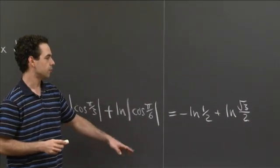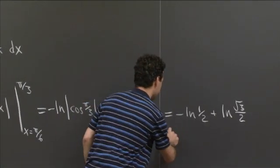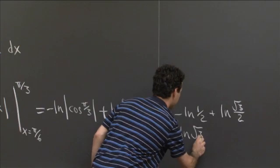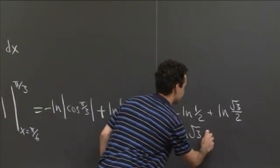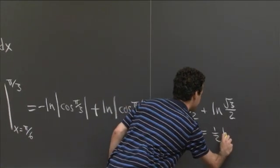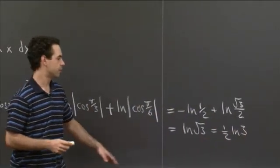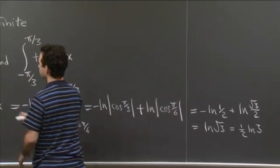And now you can use your logarithm rules to combine those into a single expression. So this is equal to ln of square root of 3, or you could even use one more logarithm rule if you wanted. So this is equal to 1 half ln of 3. So all of those are equivalent expressions for this same number, which is the value of this definite integral.